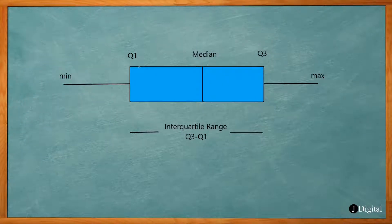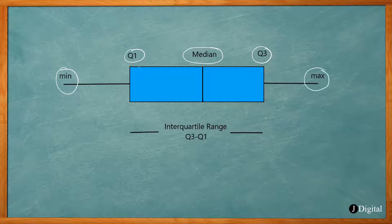This box plot summarizes a data set and the end here is the minimum value of the data set. Here at the edge of the box is the first quartile. The line inside the box is the median. The right side of the box is Q3, the third quartile. At the right here at the end is the max value of the data set.